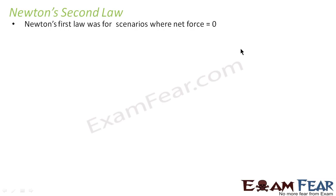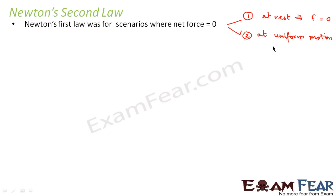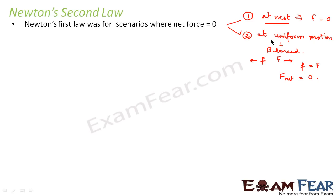What did we see? We saw that Newton's first law was true for scenarios when net force is equal to 0, because Newton's first law was for two scenarios. First, the body is at rest — body at rest means the net force on the body is equal to 0. The second was, it talked about the body at uniform motion. Uniform motion means it is under the action of balanced forces, that is equal and opposite forces. On one side we have the frictional force and on the other side we have the external force such that f is equal to capital F. Therefore, the net force is equal to 0. So Newton's first law was only applicable for scenarios where net force is equal to 0.